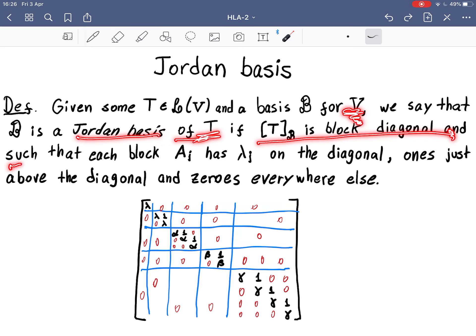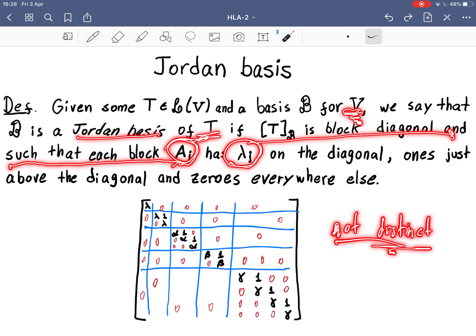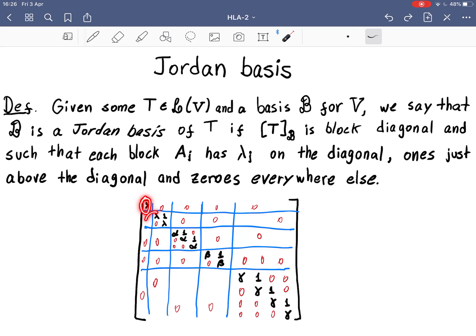So what's the form? It is block diagonal, and each block, let's call A_j the little block, it has lambda_j on the diagonal. These lambda_js don't need to be distinct. So here, for instance, this block and this block, this is A1, this is A2, and lambda_1 equals lambda_2, which is just this little lambda here.